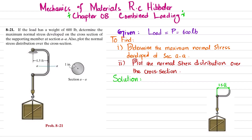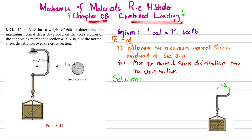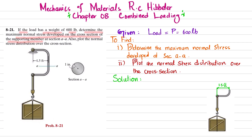Welcome back. Problem 8-21 is taken from the book Mechanics of Materials by R.C. Hibbeler, Chapter 8: Combined Loading. The problem statement is: if the load has a weight of 600 pounds, determine the maximum normal stress developed on the cross section of the supporting members at section AA.